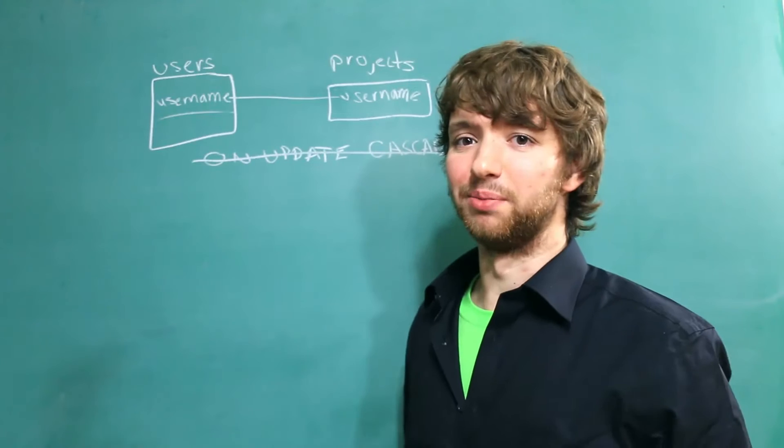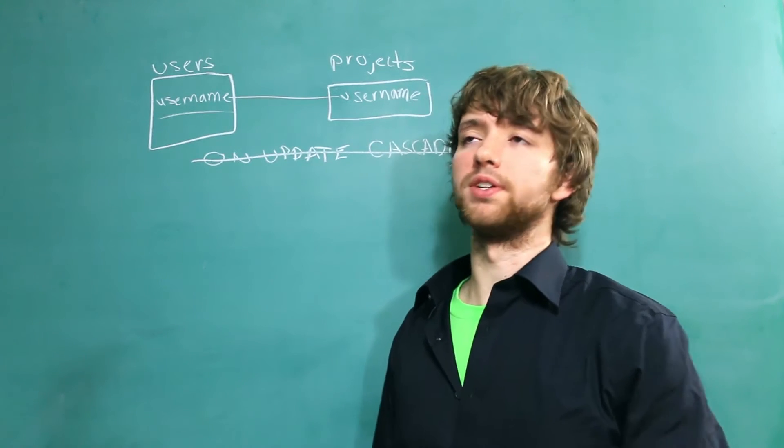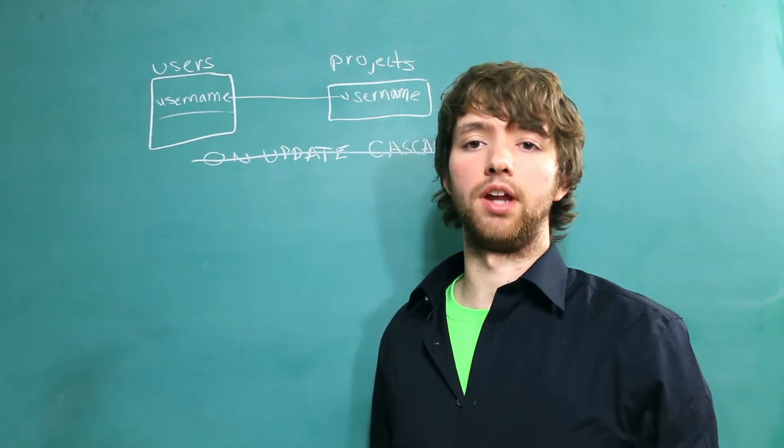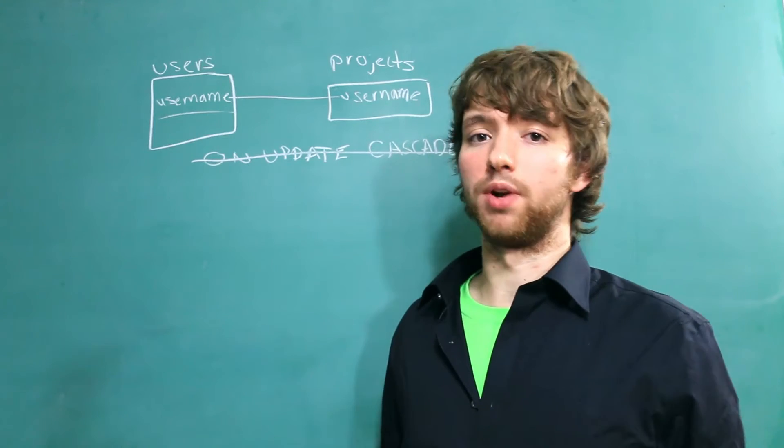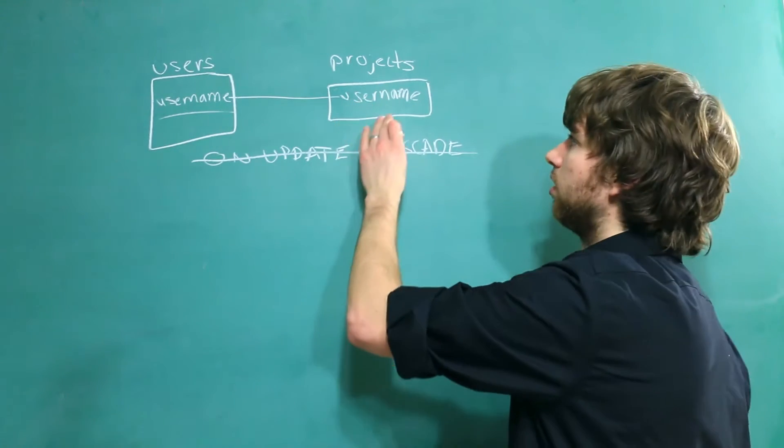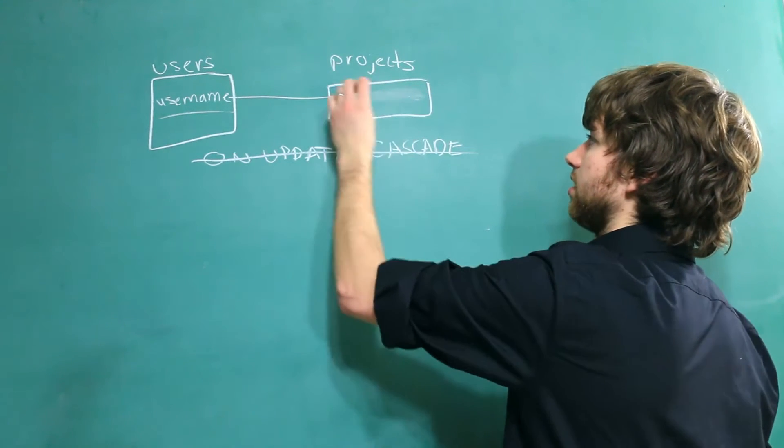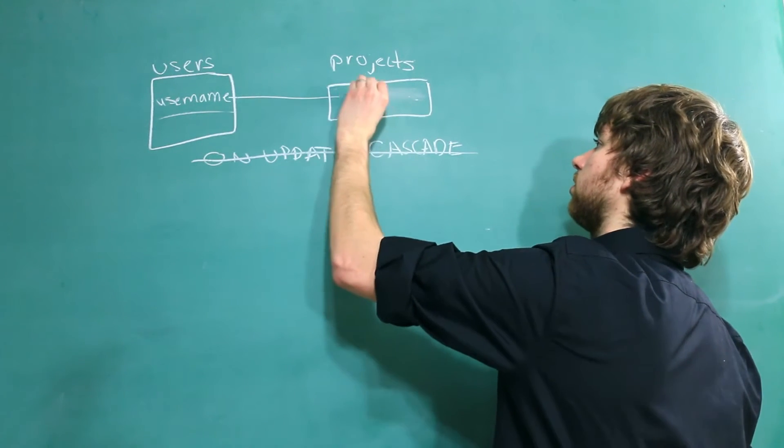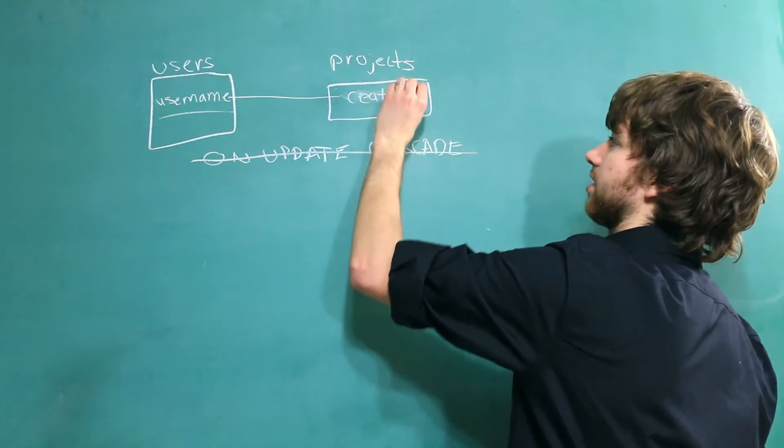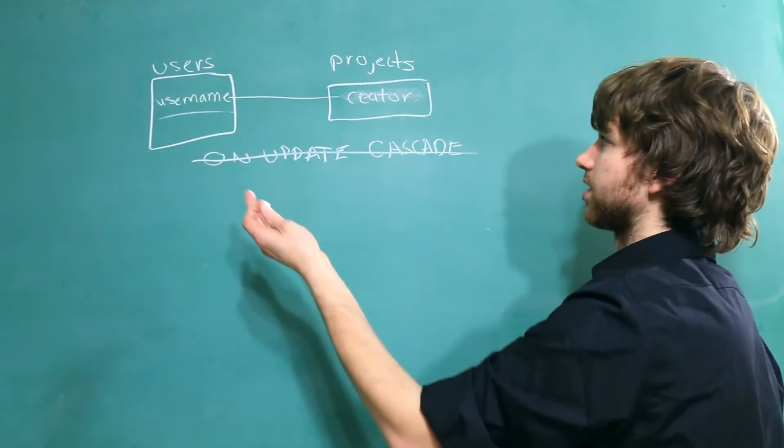But just to tickle our brains a little bit, let's imagine Oracle does not care and doesn't throw any errors. Let's figure out what would happen. So in the projects table, I actually named this wrong here, the table that references the username is the creator table. The name actually doesn't matter, it doesn't have to match the column, so it's not a big deal.